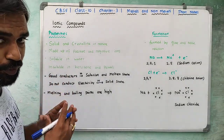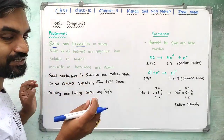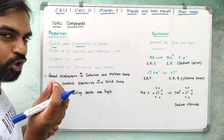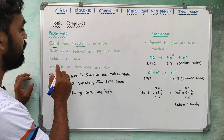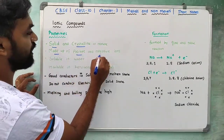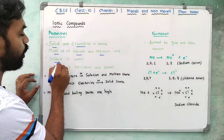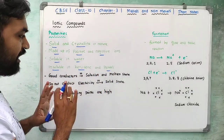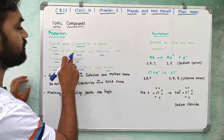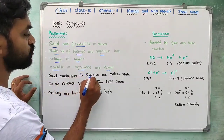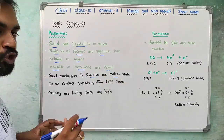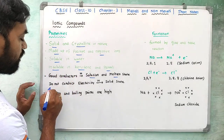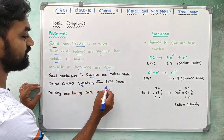Properties of ionic compounds: they are solid and crystalline — made up of positive and negative ions in a crystal structure. They are soluble in water but insoluble in organic solvents like kerosene and petrol. They are good conductors of electricity in solution and in molten state, but do not conduct electricity in the solid state.